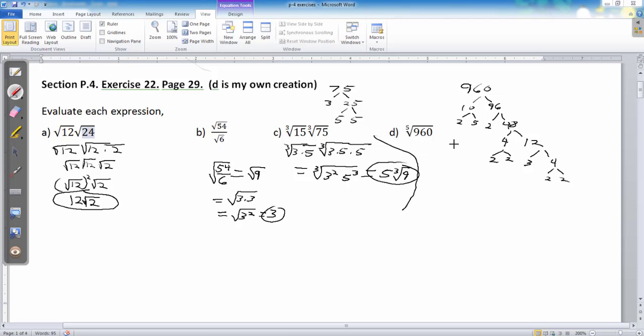And, 4 is a 2 and a 2. Wow. That's a lot of 2s and 3s. And, there's a 5. So, let's see. Give myself a little arrow here. Now, that's a very diseased looking arrow. Fifth root.